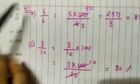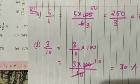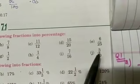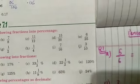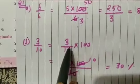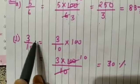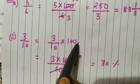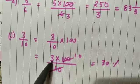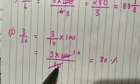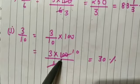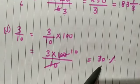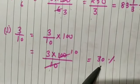One more question from question number 1 — that is J number: 3 by 10. We do the same: 3 by 10 into 100, or 3 into 100 by 10. 10 goes into 100 ten times, so 3 into 10 equals 30 percent.